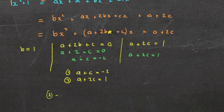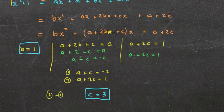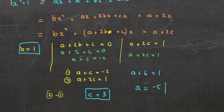Subtracting equation 1 from equation 2: a minus a is 0, 2c minus c is c, 1 minus negative 2 is 3, so c equals 3. I've found b and c. Using a plus 2c equals 1: a plus 2 times 3 is 6, equals 1, so a equals 1 minus 6, which is negative 5. I've now got a equals negative 5, b equals 1, and c equals 3.